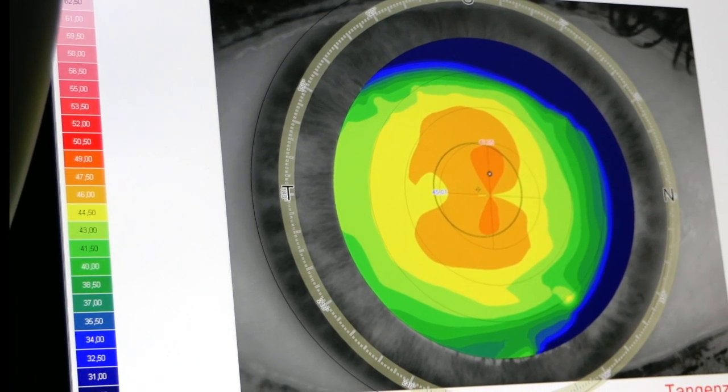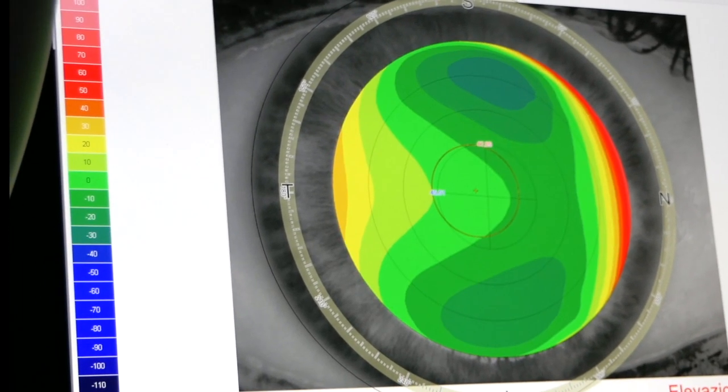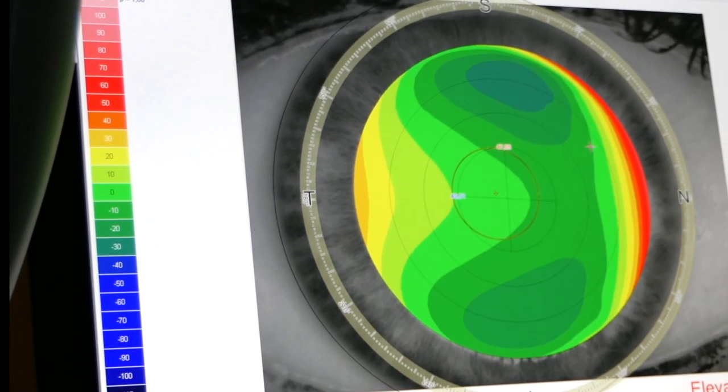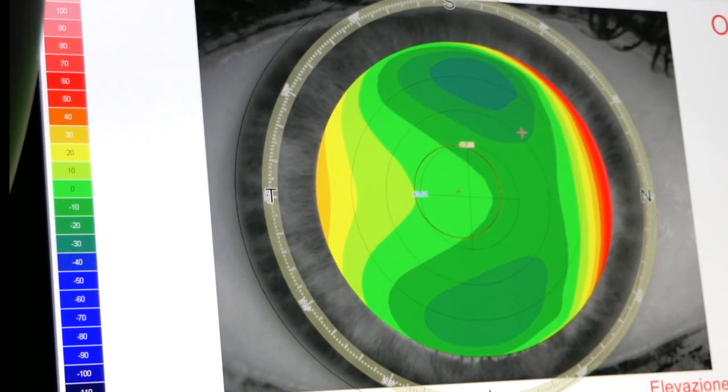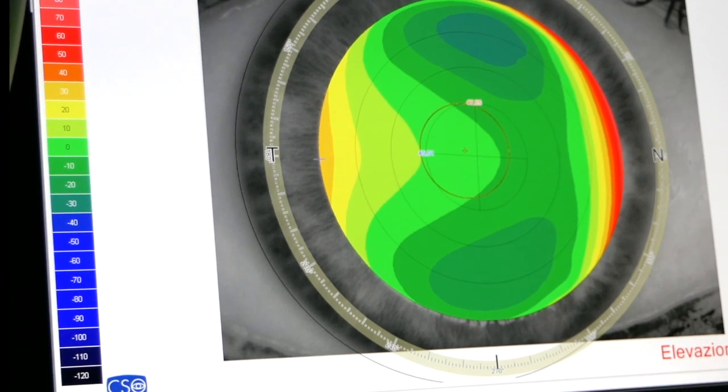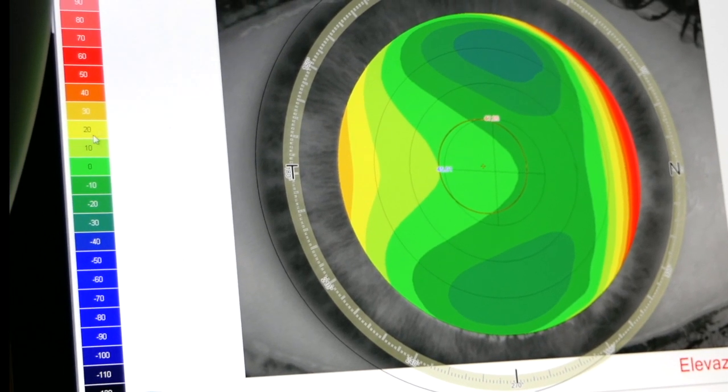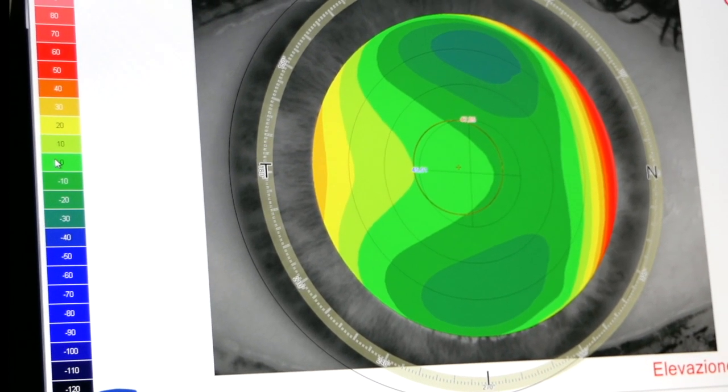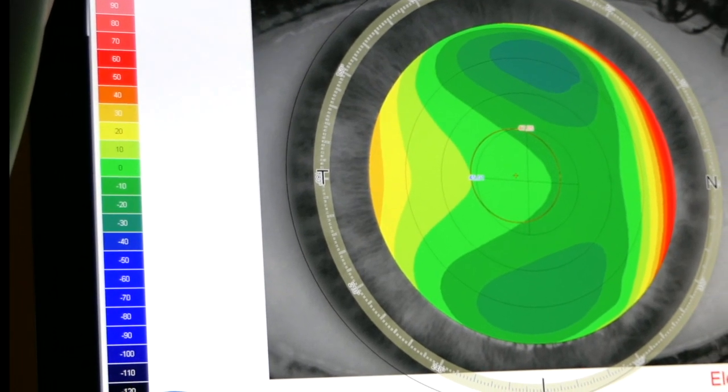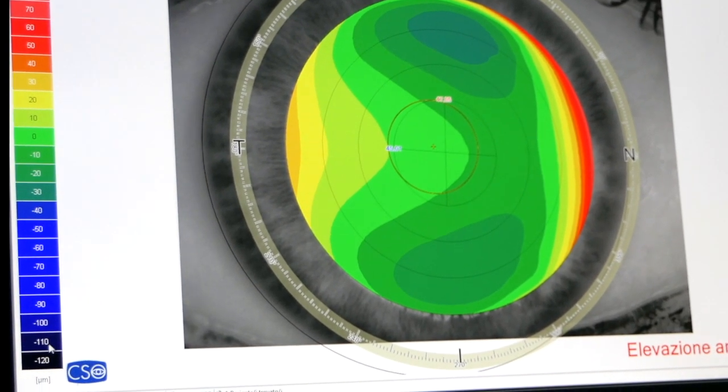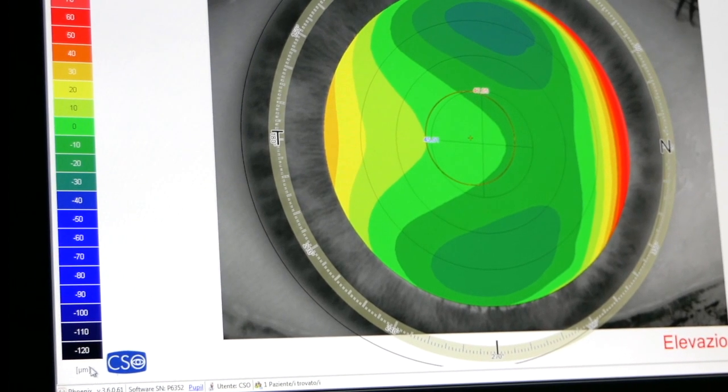In the same way, the machine can give us the front elevation, which is a more difficult concept. Now the scale is zero green, then the red is plus and blue is minus expressed in microns.